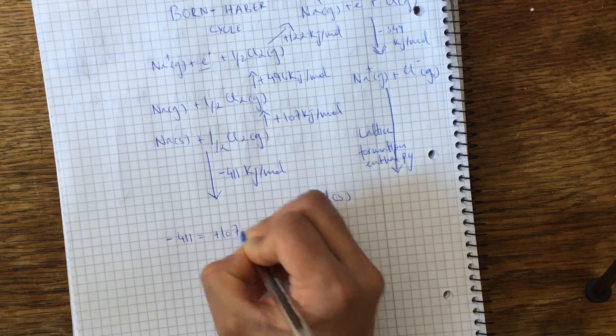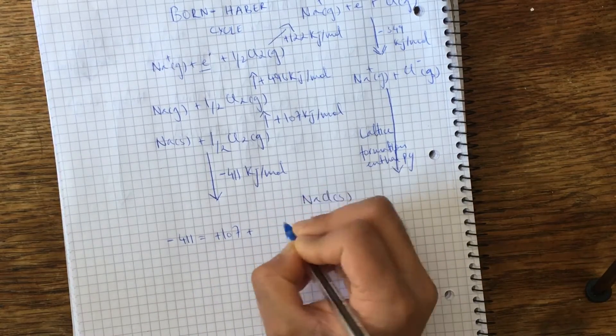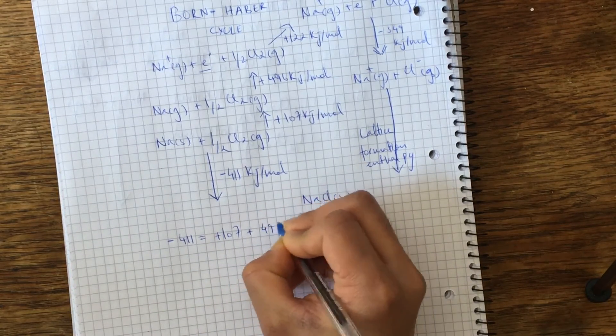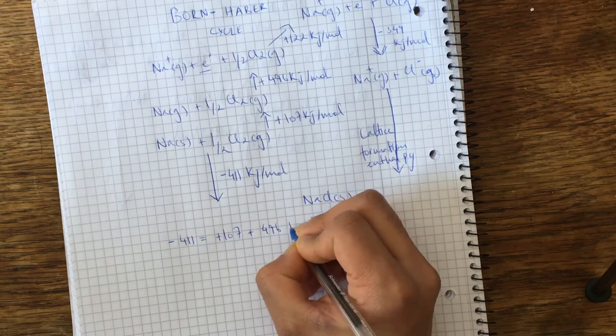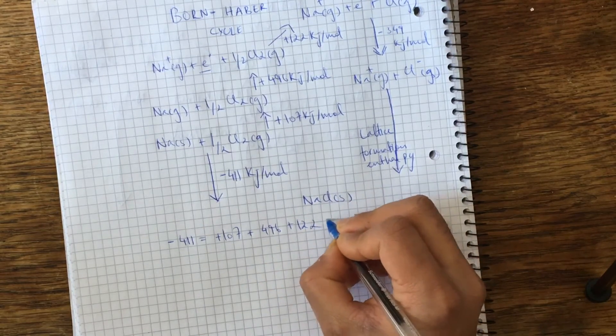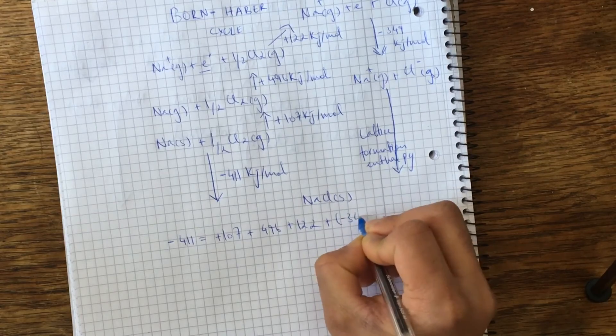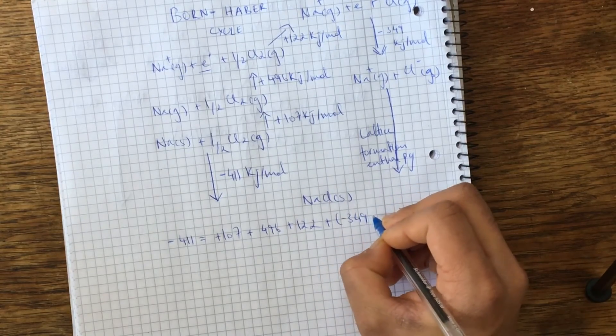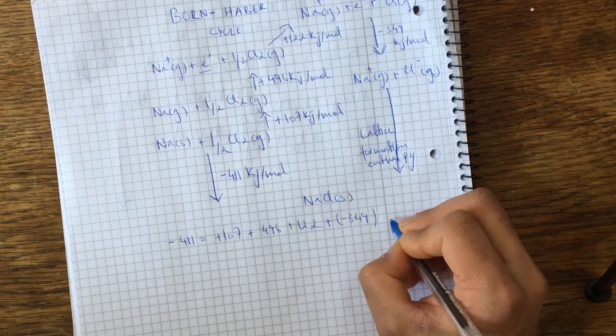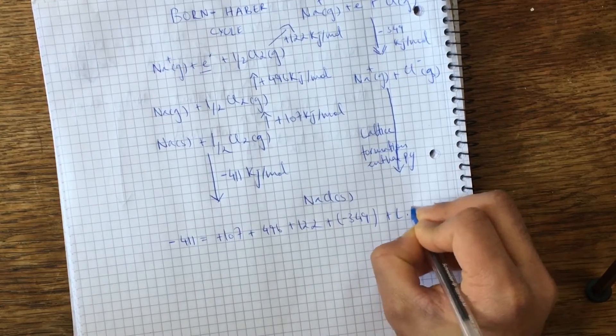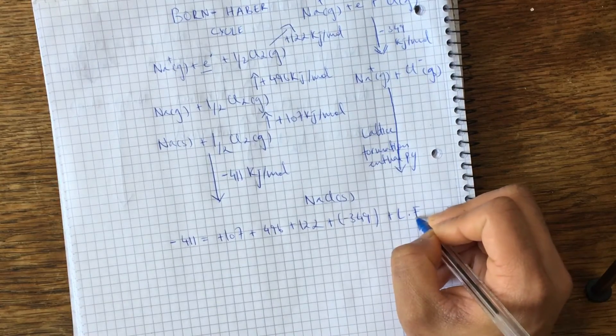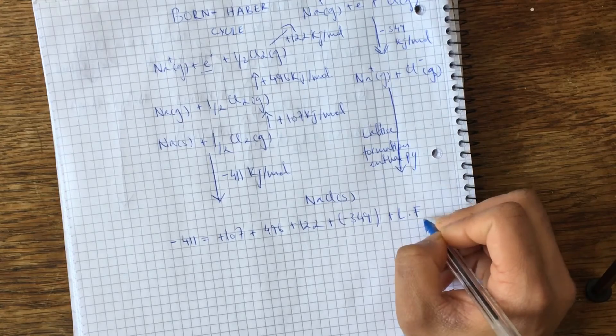And basically, 107 kilojoules per mole plus 496, and then you have 122, and then you have plus, this is negatively charged, and then you have the lattice formation enthalpy of sodium chloride.